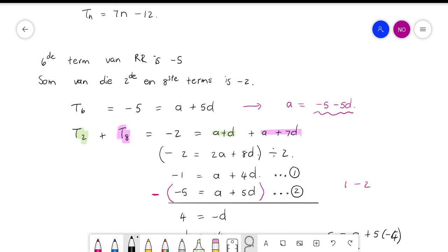Then we went here and said term 2 and term 8 can be written separately as a plus d, that's for term 2, and a plus 7d. So I simplified that, got 2a plus 8d, and then I was able to divide the whole thing by 2 just to make it easier.